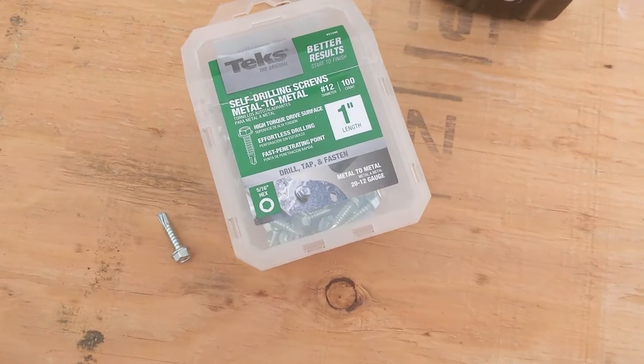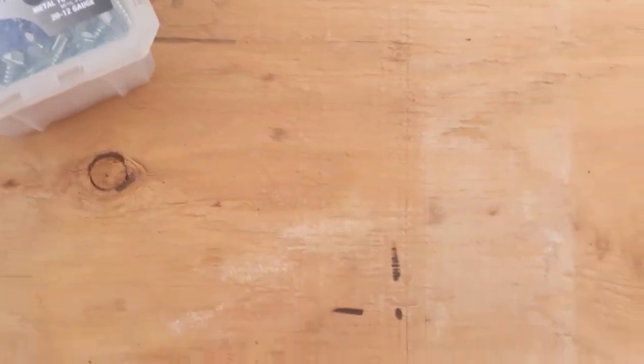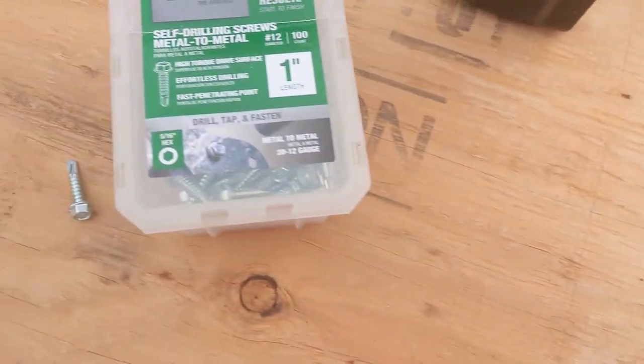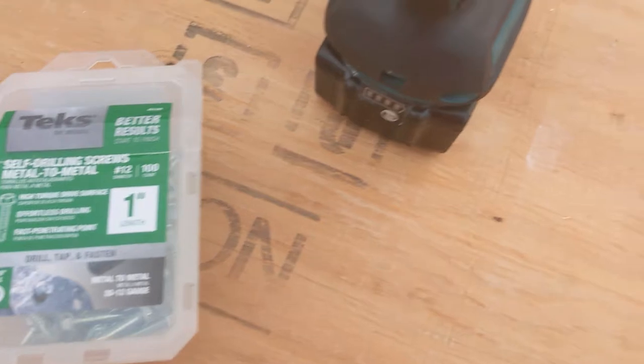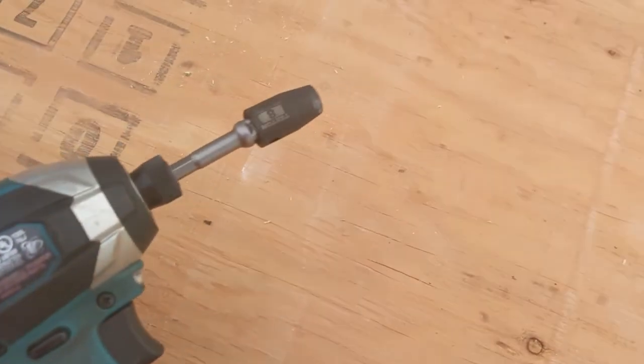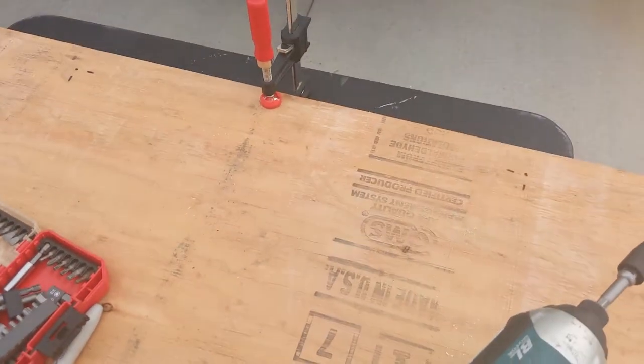To secure the top to the frame, I am just using these one-inch self-tapping screws. I found the general location by just flipping the frame upside down on the plywood, and these guys will do 20 to 12 gauge steel, so that is just fine. And then I just drive them in with this 8mm bit, and they go in pretty easily.